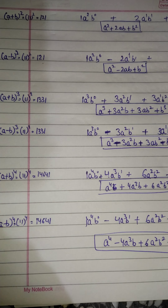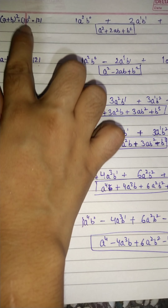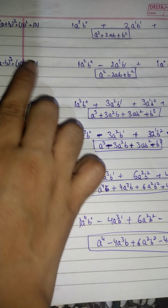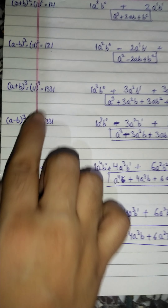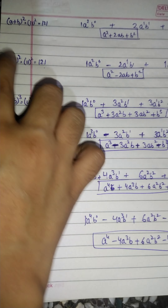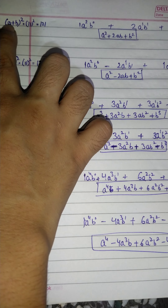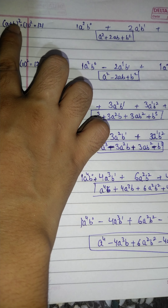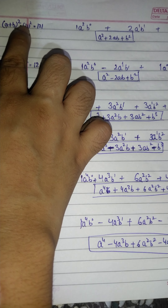Here is a trick to remember the algebraic identities: (a+b)², (a-b)², (a+b)³, and (a-b)³. How do we remember these? We assume both a and b equal 1.